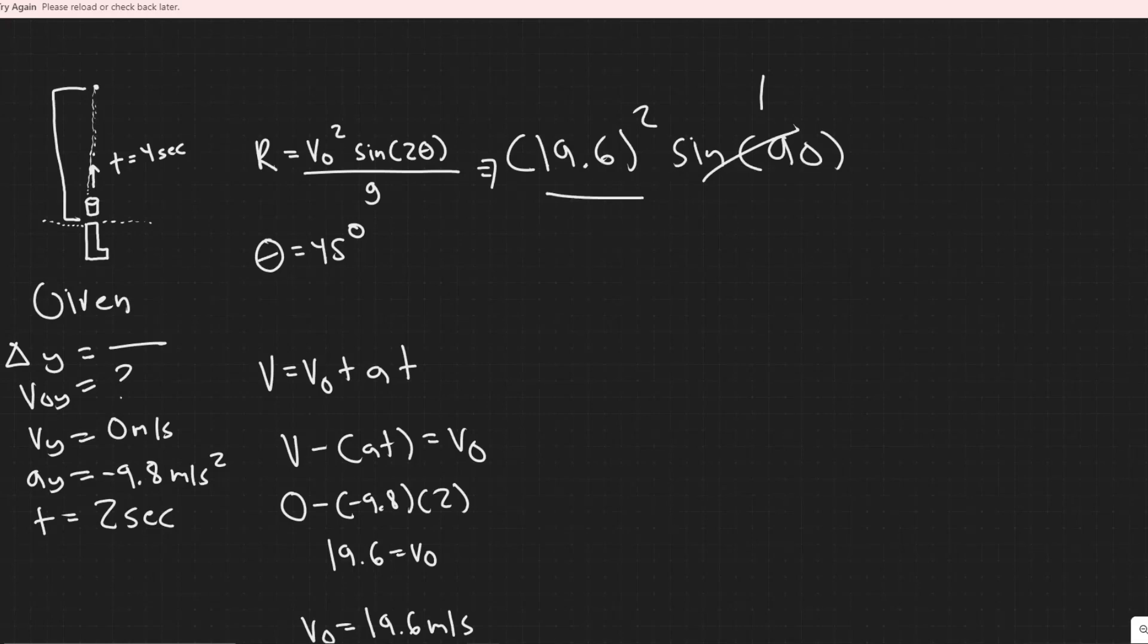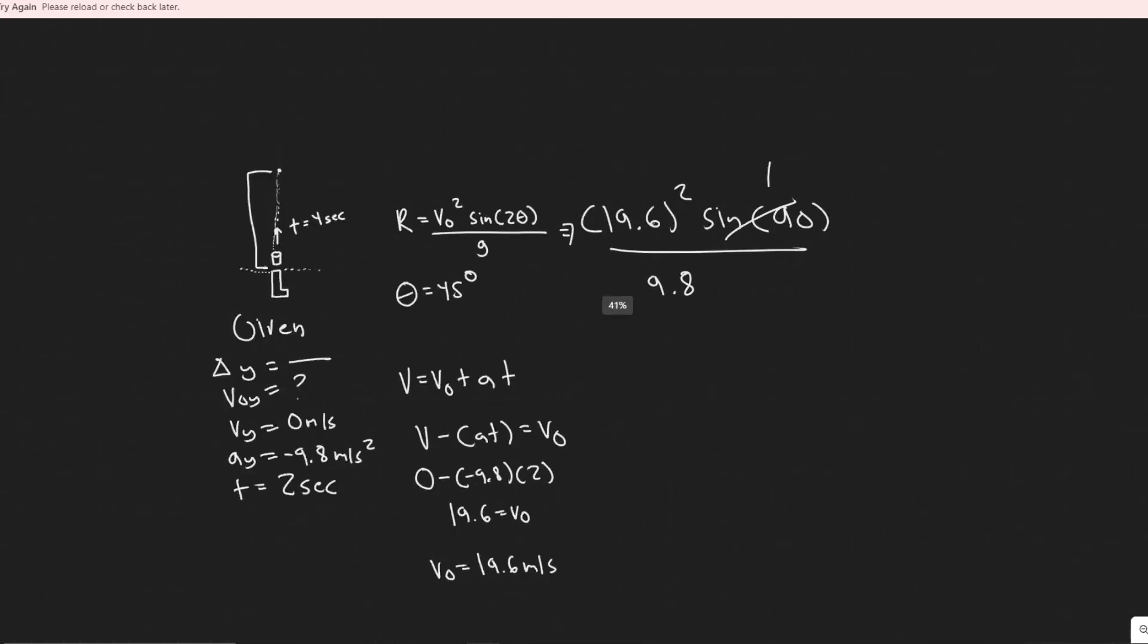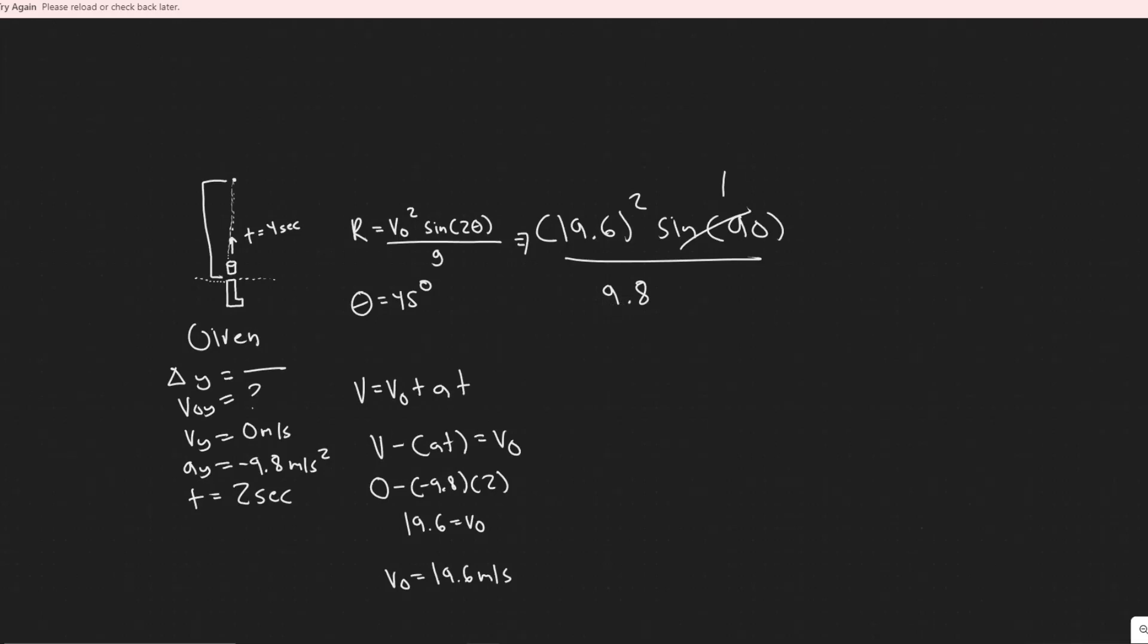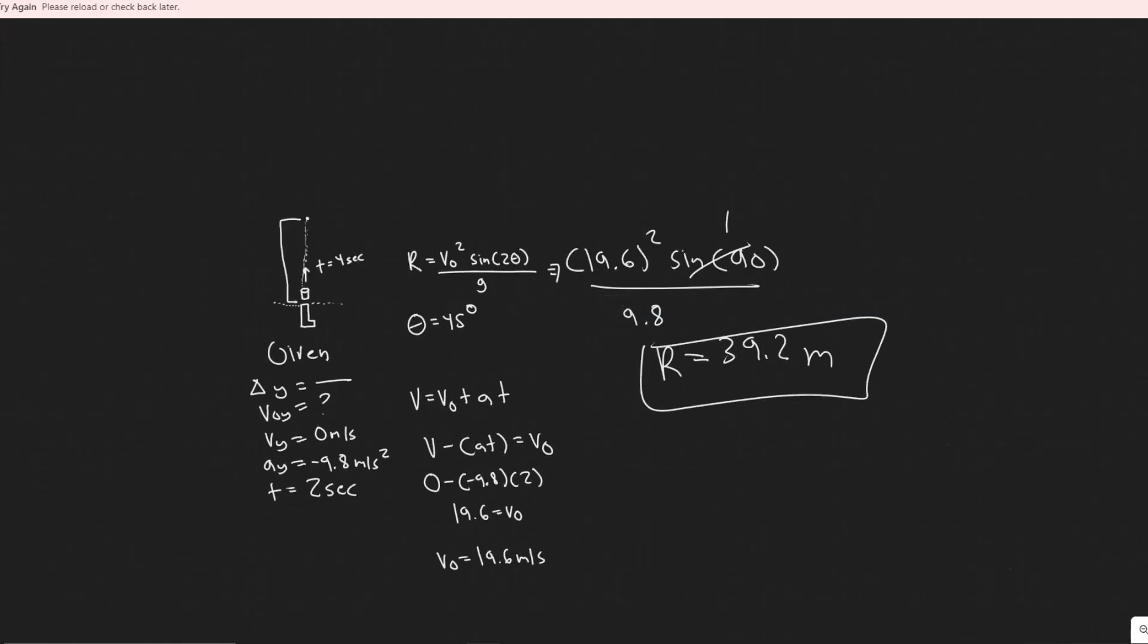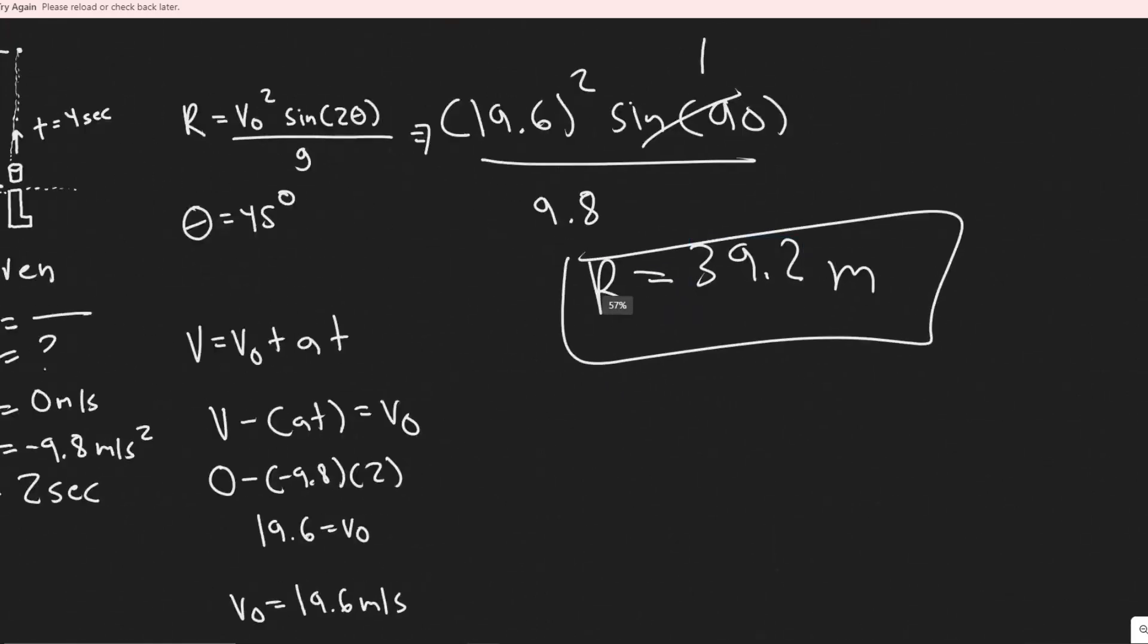And then you would just divide by 9.8 or g. You should see it's really just 19.6 squared. And then you're dividing by 9.8 there. You would get the range is equal to 39.2. Since we're using the standard units, we just have meters here. Since we use meters per second for the velocity. But essentially, the max range or horizontal range is 39.2 meters. This is going to be your answer.